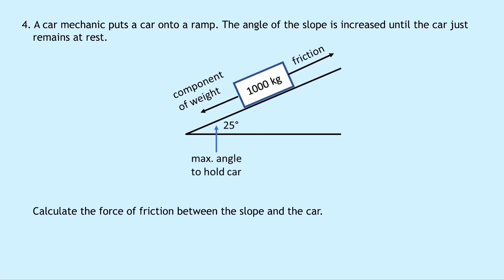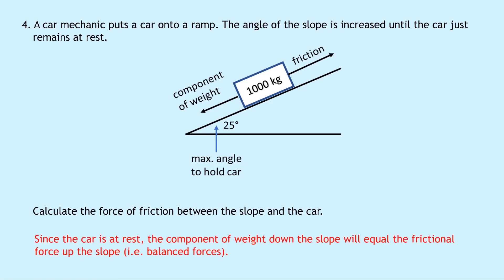Question four says a car mechanic puts a car onto a ramp. The angle is increased until the car just remains at rest — calculate the force of friction between the slope and the car. The car is 1000 kg and the maximum angle to hold the car is 25 degrees. Since the car is at rest, the component of weight down the slope equals the frictional force up the slope — balanced forces.